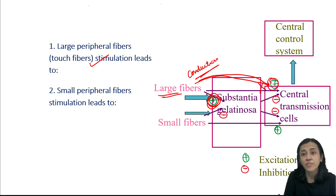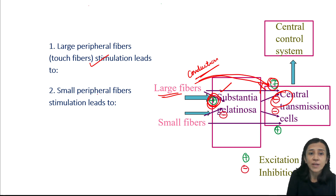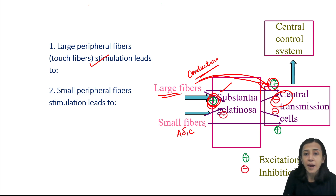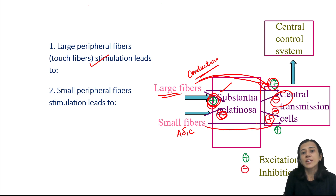Substantia gelatinosa regulates central transmission cell activity — it causes negative feedback inhibition. But when small fibers (A-delta and C fibers) are stimulated, they pass impulses slowly and stimulate the central transmission cell, but they inhibit substantia gelatinosa. Inhibition of inhibition results in a positive action, so when small fibers are stimulated, transmission of pain sensation increases.